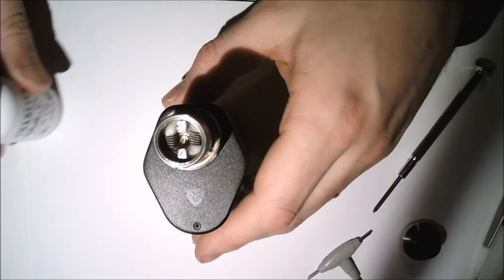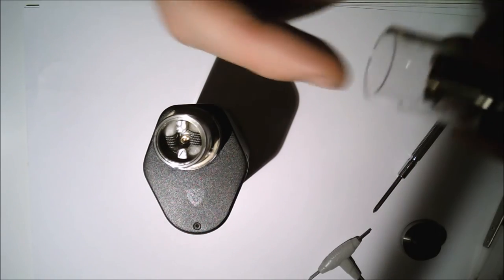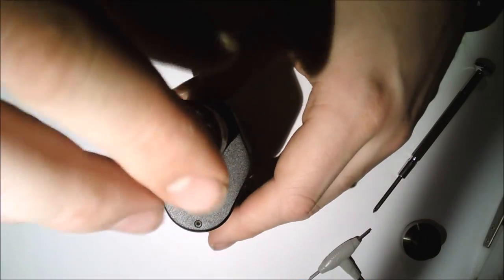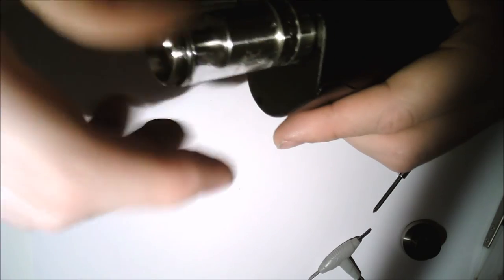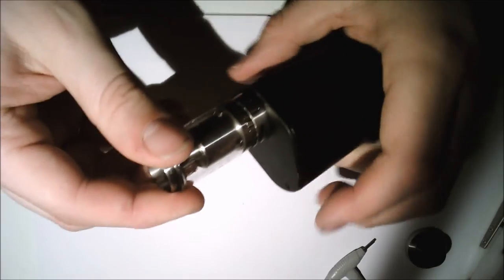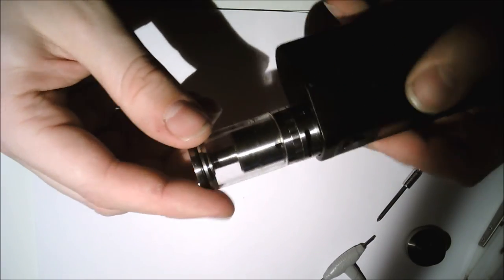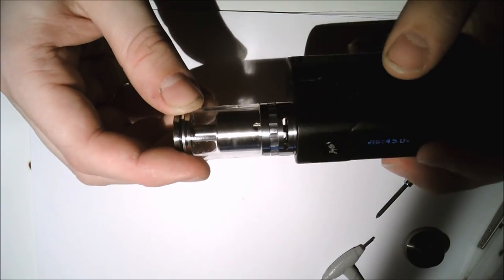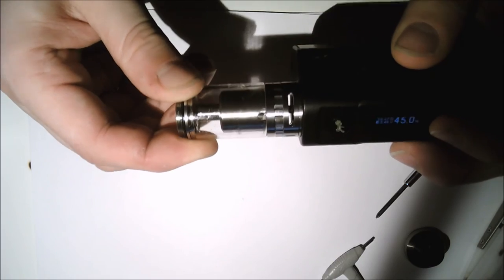There's no reading, cool, lovely. And then what we want to do is we take our tank section. Screw that on, nice and firm. Turn it so that the juice flow control holes are closed, like so. Okay, then we can fill it up.